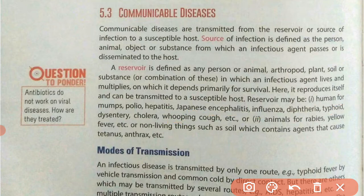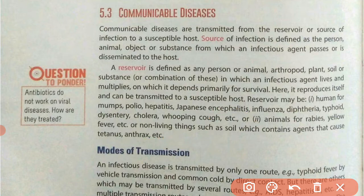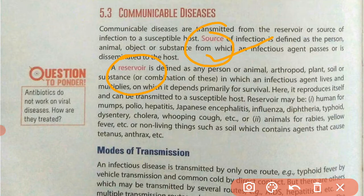Animals can be reservoirs for pathogens of rabies and yellow fever. Non-living things such as soil contain agents that cause tetanus and anthrax. Soil is a reservoir where pathogens can live and reproduce. Sources are the places from where pathogens get transferred to a healthy person, while reservoirs are the places where pathogens live, multiply, and survive.